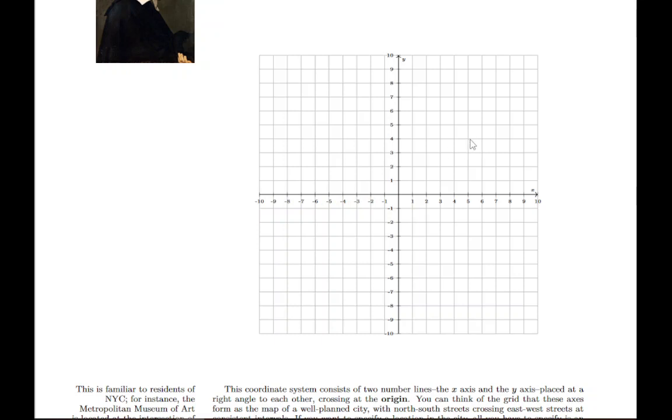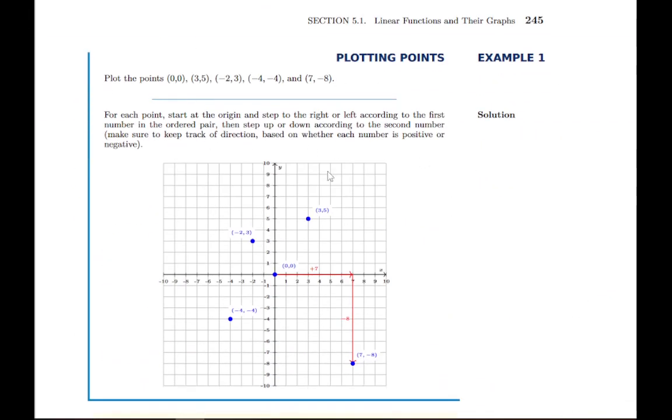For instance, this point over here where the mouse is would be like (5, 4) because it's five steps to the right and four steps up. If it helps you, you can think of this as a grid of city streets and you're telling someone's address based on which streets cross at that intersection.